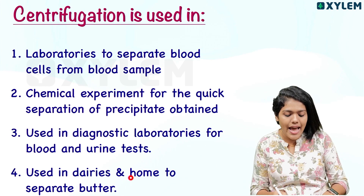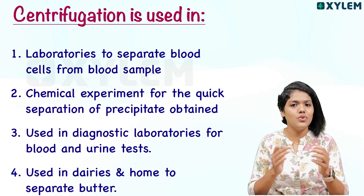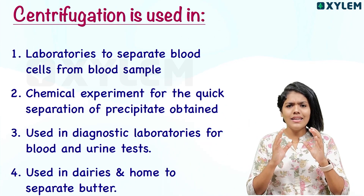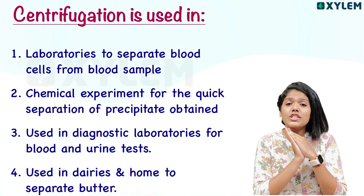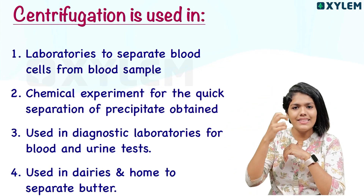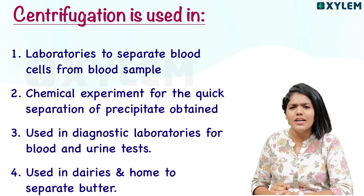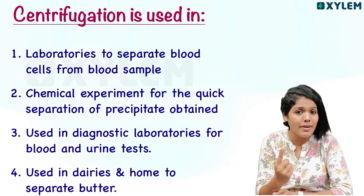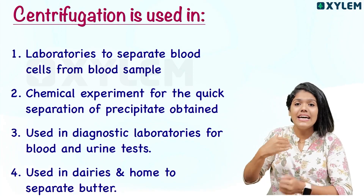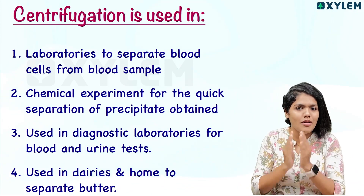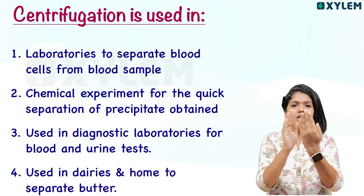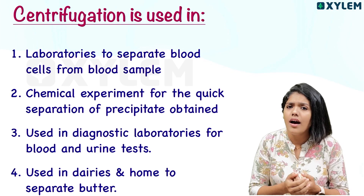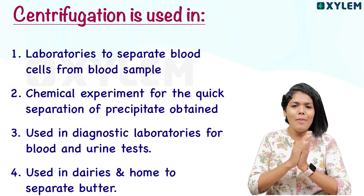Centrifugation is also used in dairies and at home. In our daily life, the washing machine is an example of centrifugation. In a fully automatic washing machine, the dryer spins the clothes rapidly to eject water particles from them. This spinning action to remove water is a kind of centrifugation.